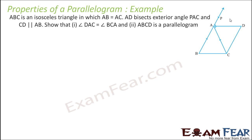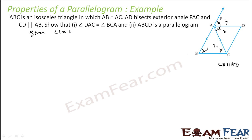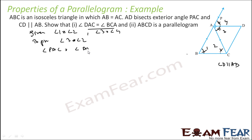Next problem: it is given that ABC is an isosceles triangle with AB = AC, so the base angles are equal. AD is the bisector of angle PAC, so it divides angle PAC into two equal parts. CD is parallel to AB — that is also given. We have to prove that angle DAC = angle BCA. Let's label the angles 1, 2, 3, 4. Since PAC is an exterior angle, angle PAC = angle ABC + angle ACB by the exterior angle sum property.